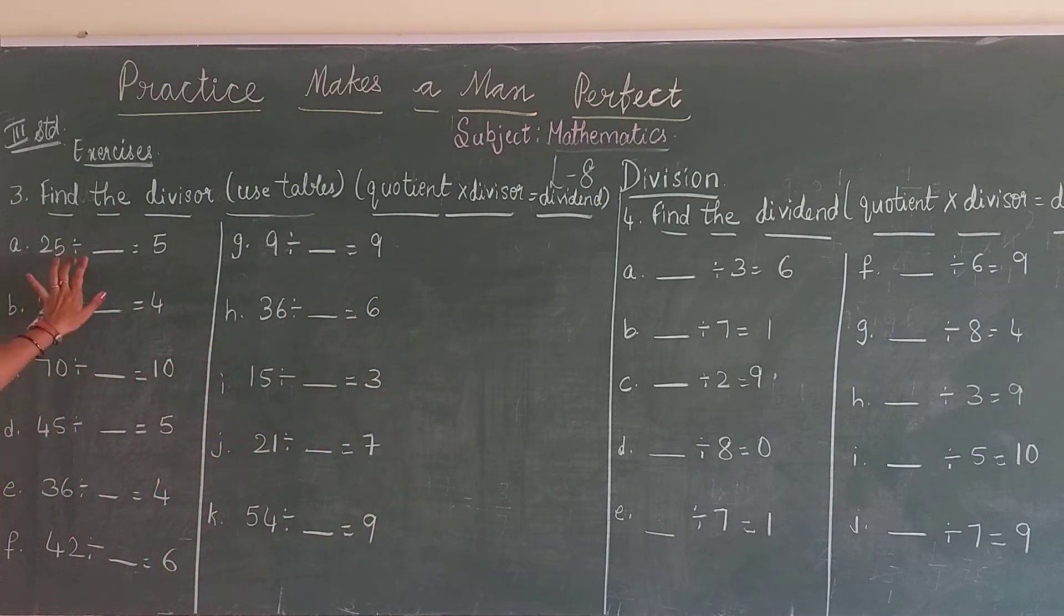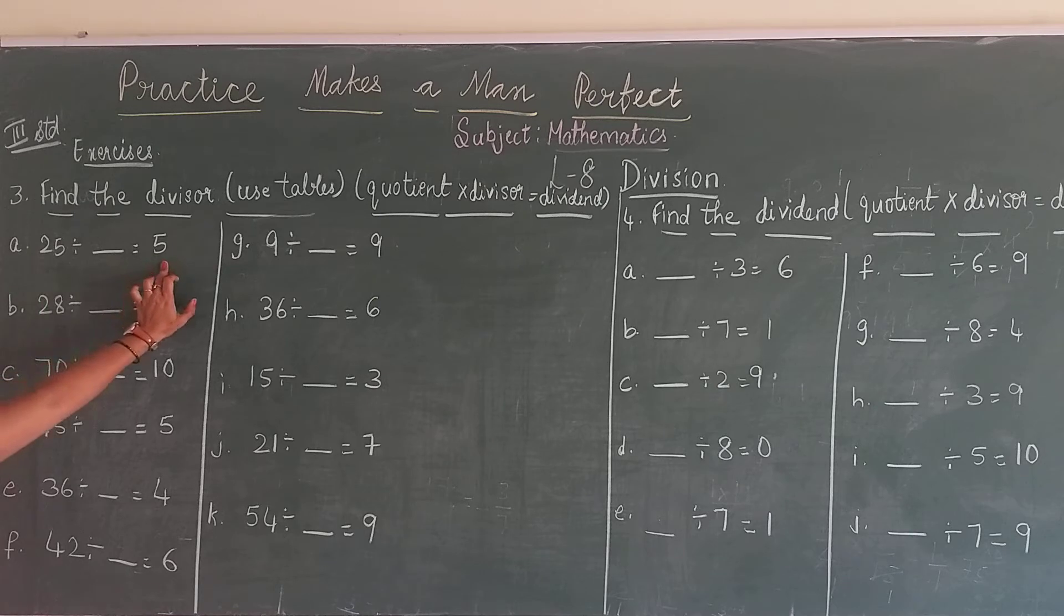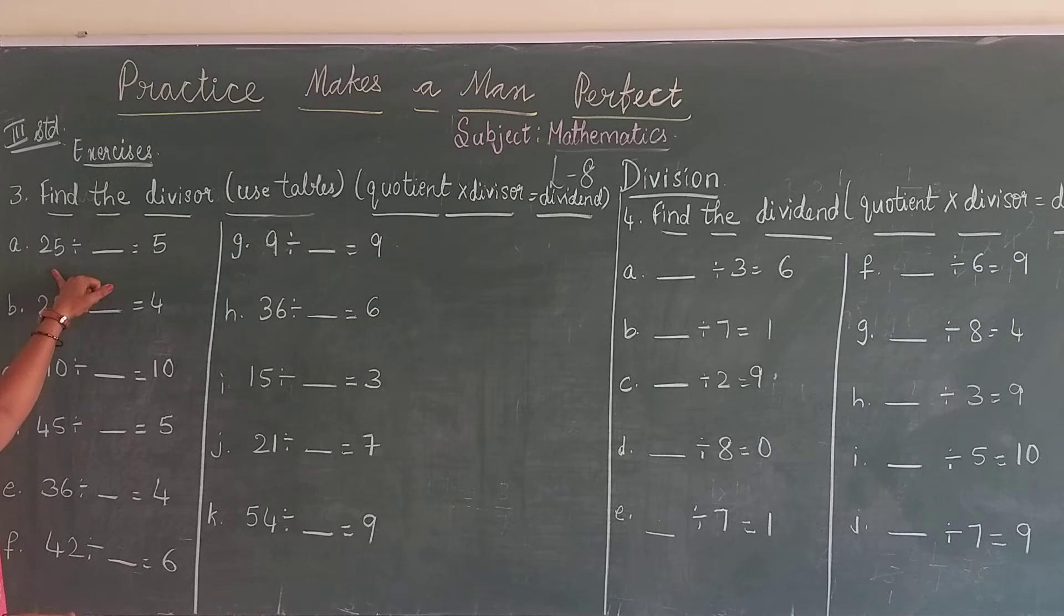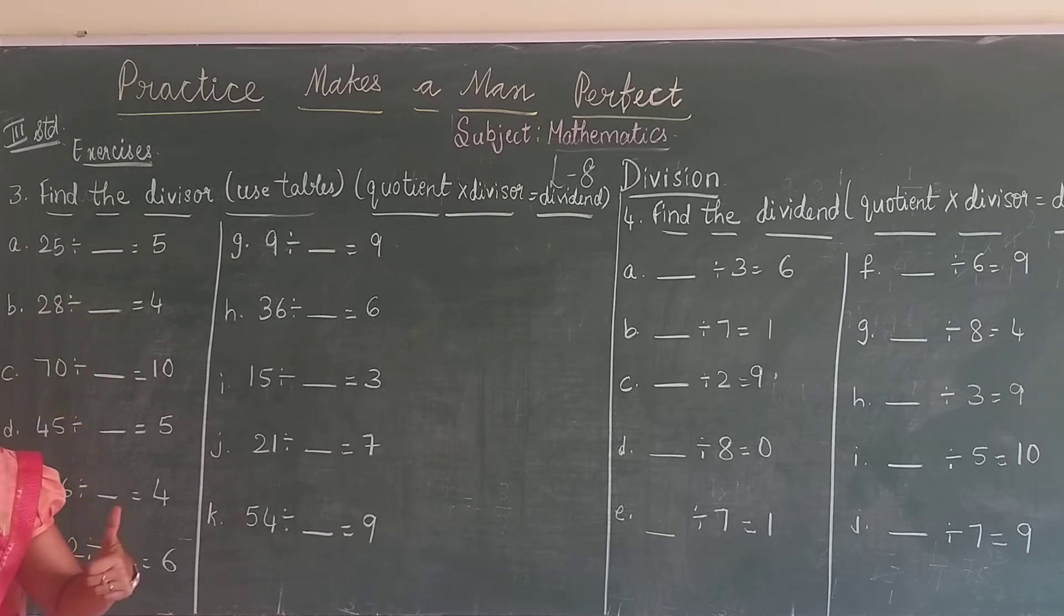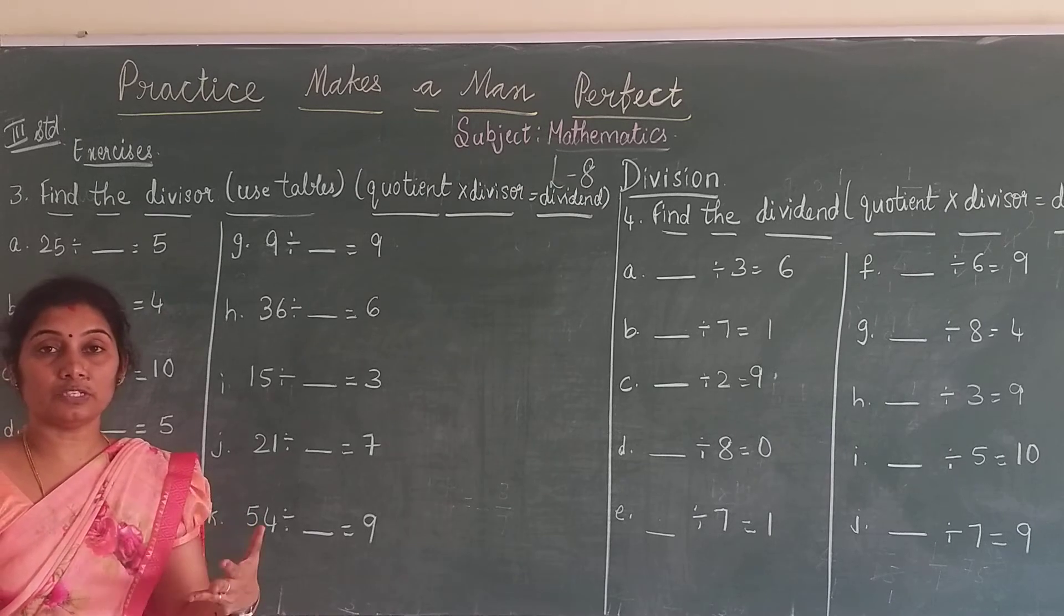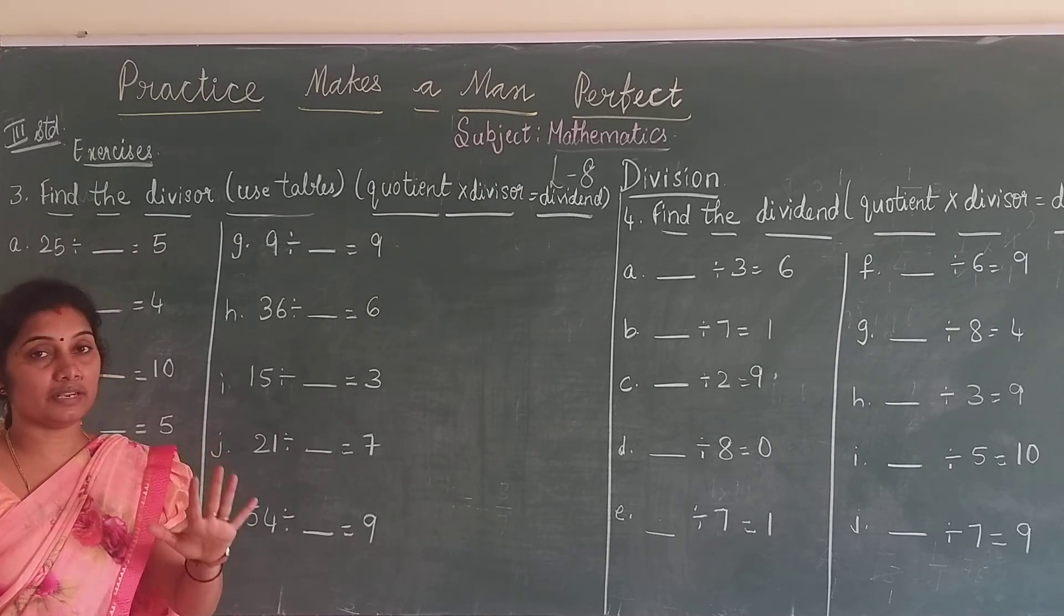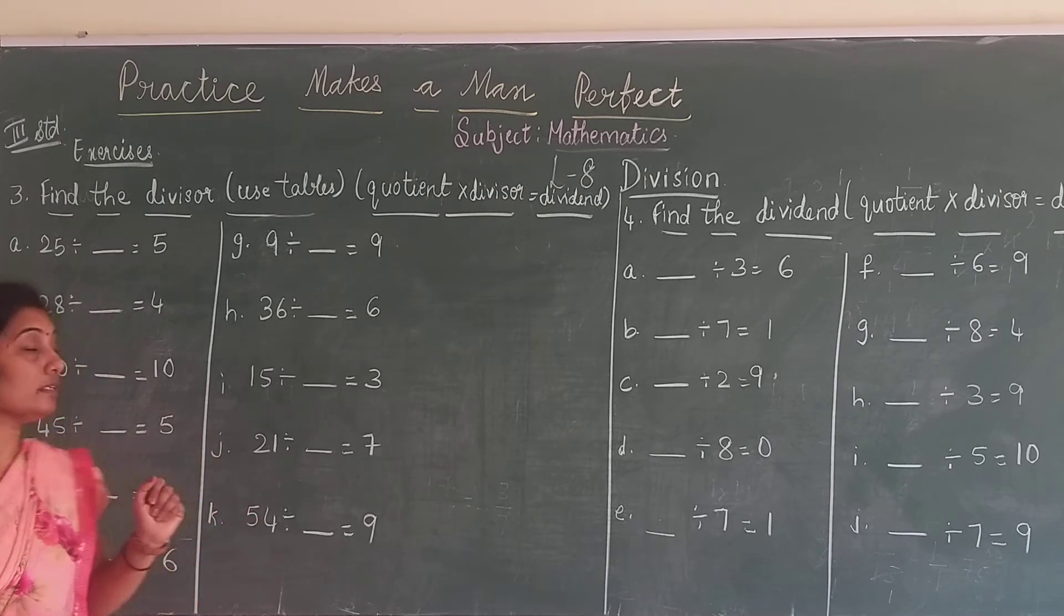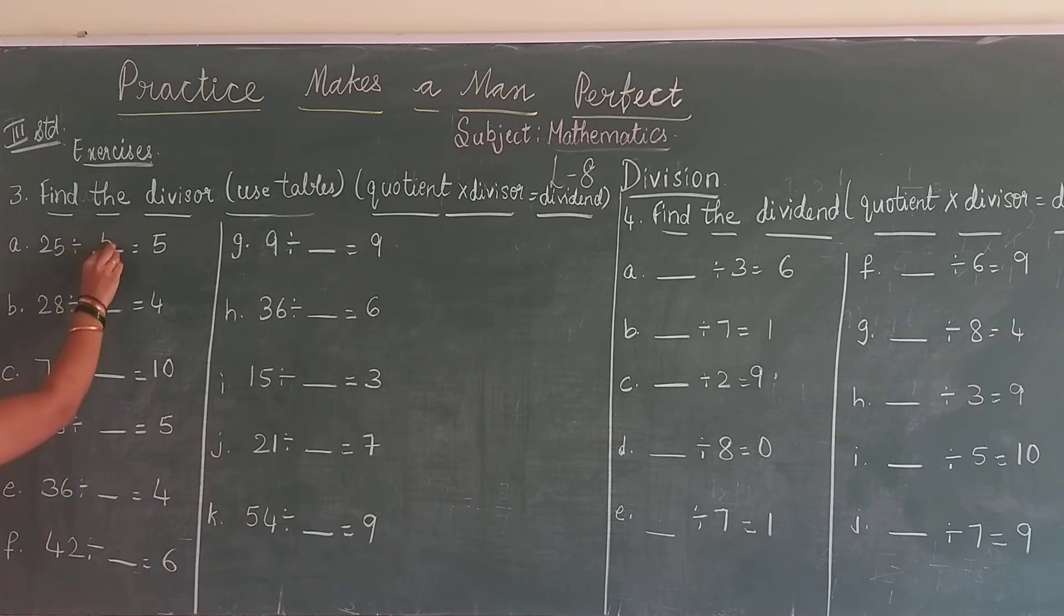So here, 25 divided by that will be equal to 5. Here we have to see the tables of 5. From 5, 25 goes by which number. See 5 ones are 5, 5 twos are 10, 5 threes are 15, 5 fours are 20, 5 fives are 25. So it has gone 5 times. So 5 is the answer.